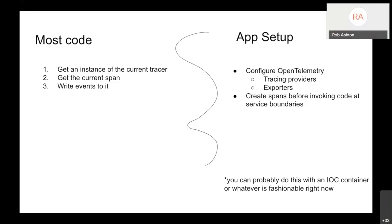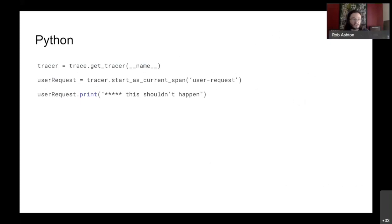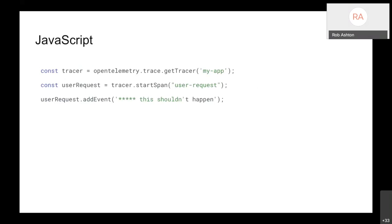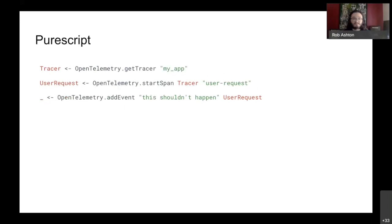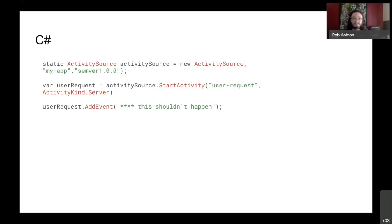In Python: get your tracer, start a span, and write an event to that span. In JavaScript: getting a tracer, starting a span, and writing an event to that span. In PureScript: same thing again. All these things look the same - which is nice - except for C#, which doesn't look the same.